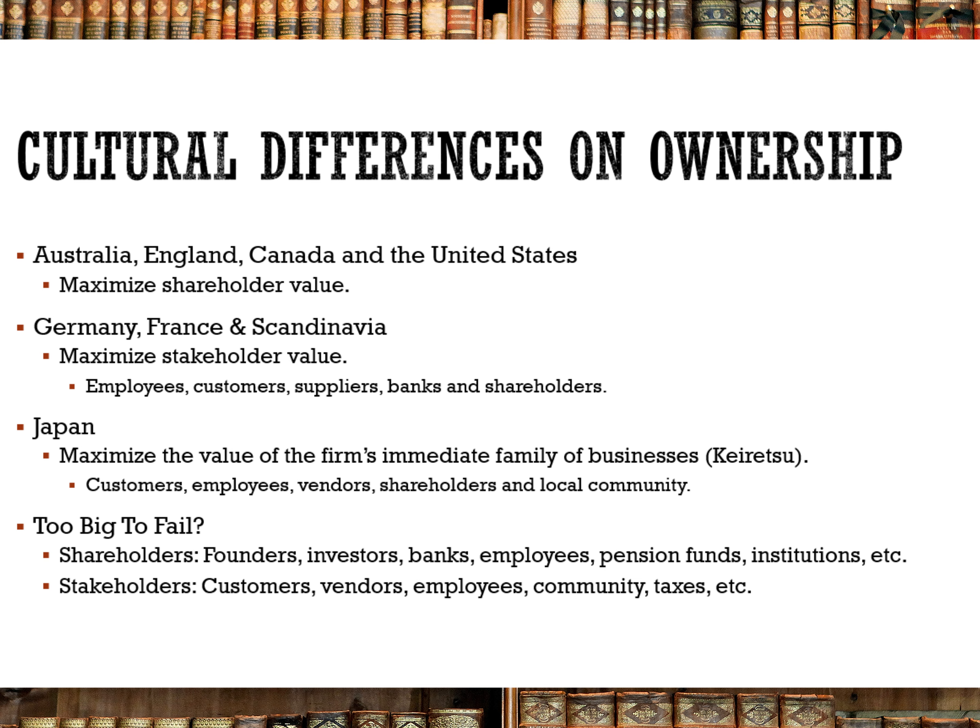There are many cultural differences on ownership. Australia, England, Canada, and the United States tend to believe that maximizing shareholder value is the way to go. Germany, France, and Scandinavia believe maximizing stakeholder value is best — their businesses are very engaged in the well-being of employees, customers, suppliers, banks, and shareholders. Japan believes in maximizing the value of the firm's immediate family of businesses — suppliers, banks, customers — with the business intended to enrich the local community.